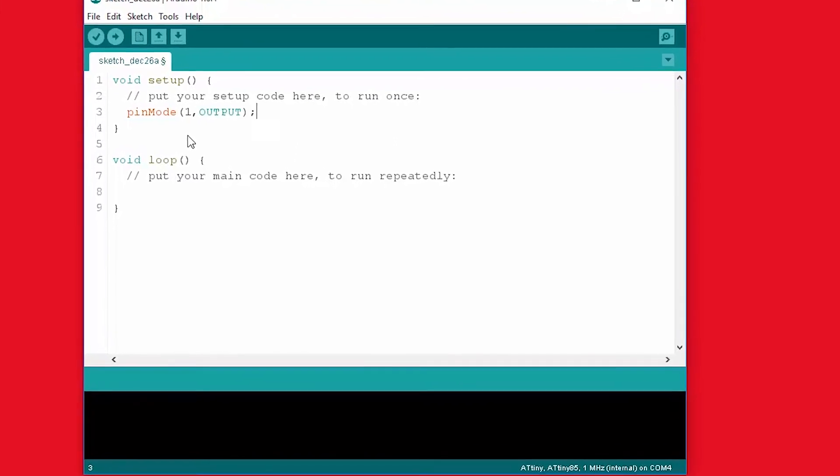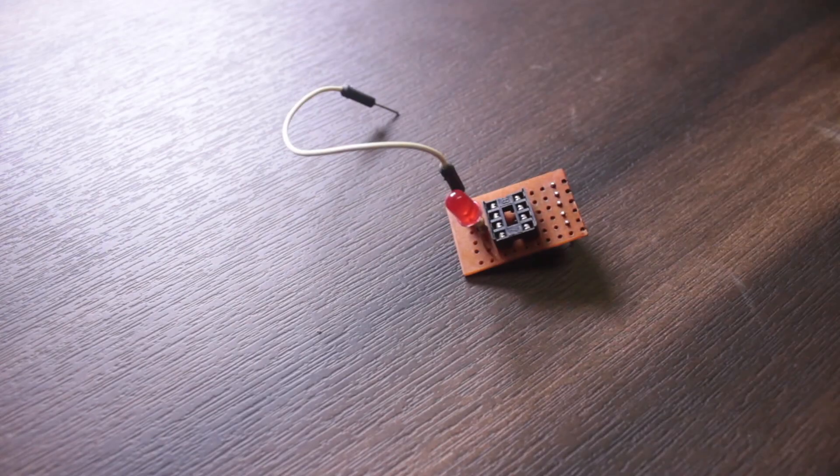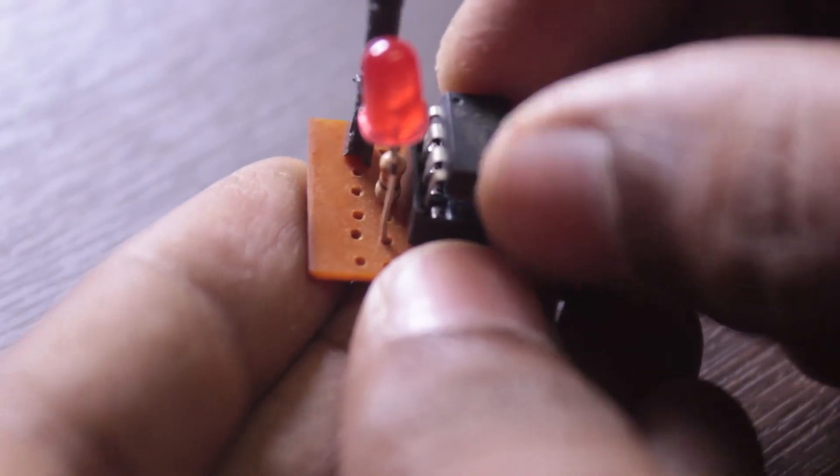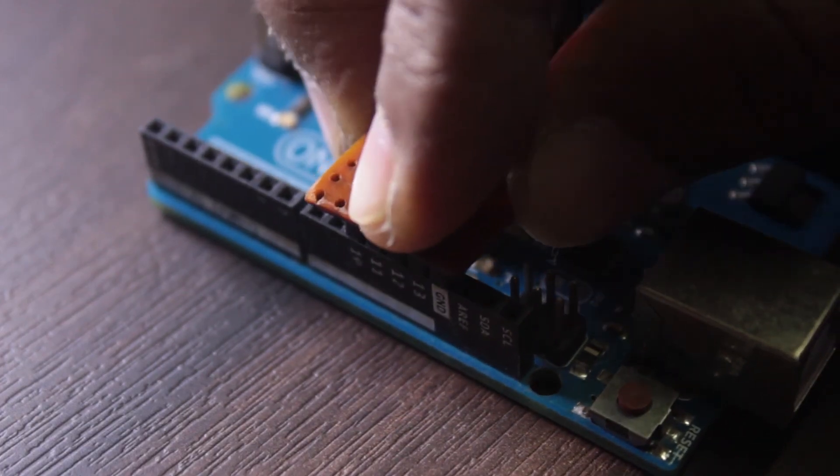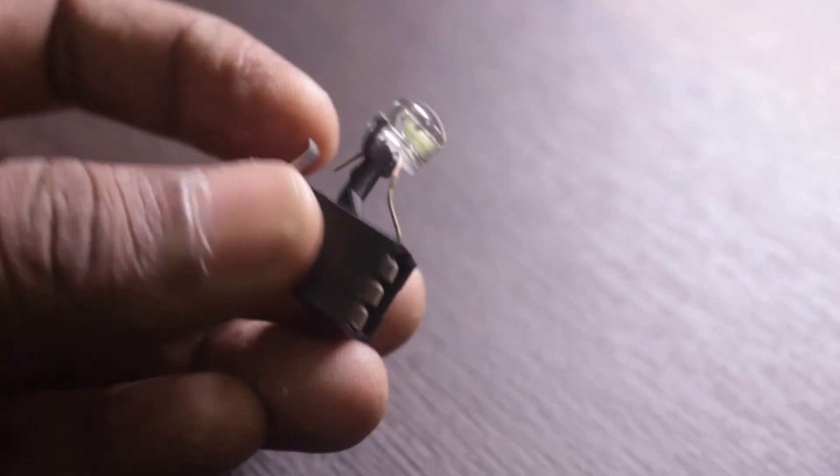...making pin 0 and pin 1 as analog outputs and programmed the chip by using my ADTINY shield. If you don't know how to program an ADTINY microcontroller, then check out my previous video. If you don't want to use a microcontroller, you can use any 555 timer IC or you can just tie the LED right to the coin cell battery. Still going to work.